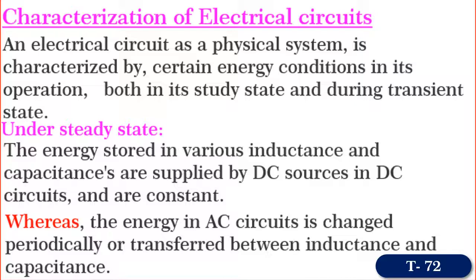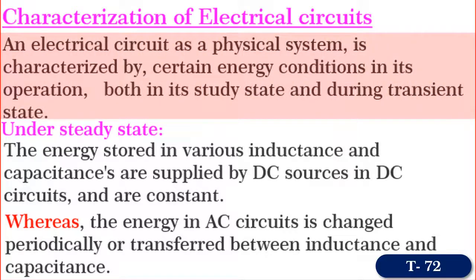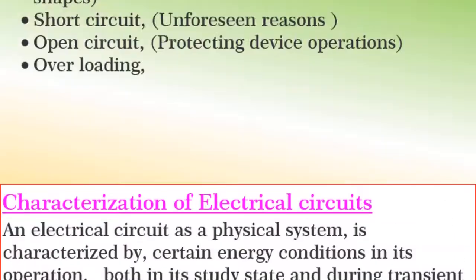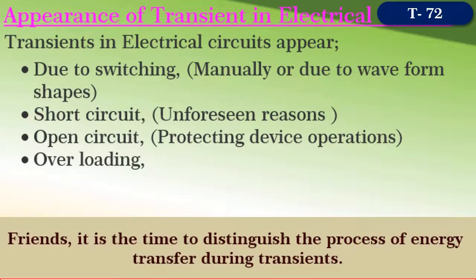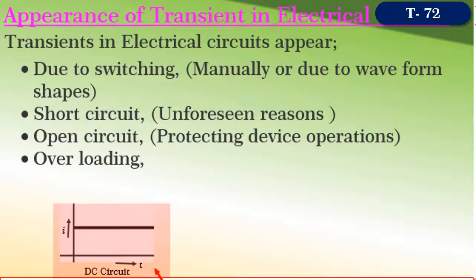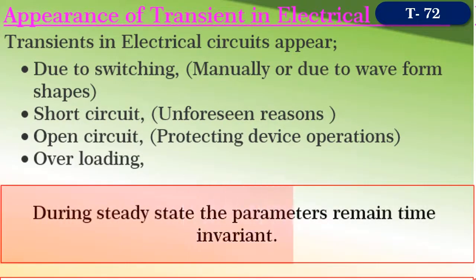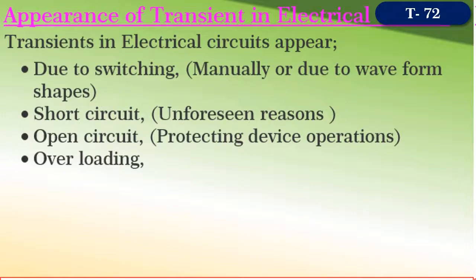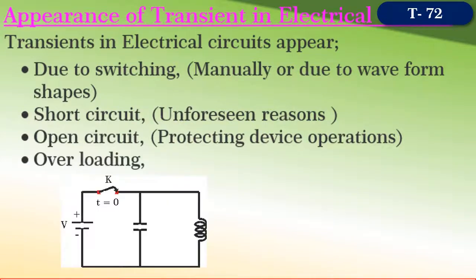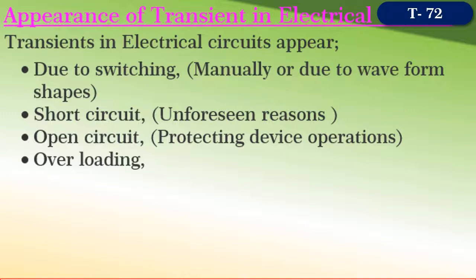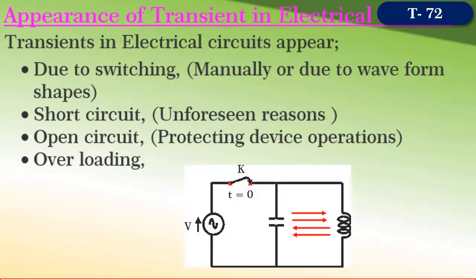An electrical network as a physical system is characterized by certain energy conditions in its operation, both in steady state and during transients. Now it is time to distinguish the process of energy transfer in transients. During steady state, the variations of voltages and currents remain constant in DC circuits, whereas in AC circuits they vary periodically — that is what we say: parameters in steady state are time-invariant. During steady state, energy stored in inductance and capacitance elements is supplied by DC sources in DC circuits, whereas the energy in AC circuits is changed periodically or transferred between inductance and capacitance elements.